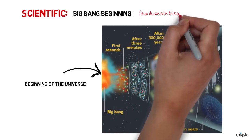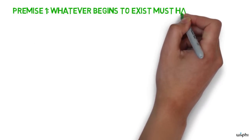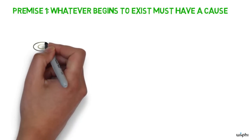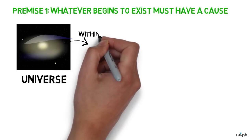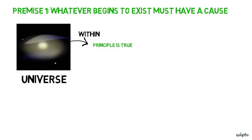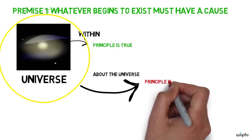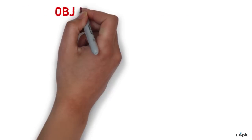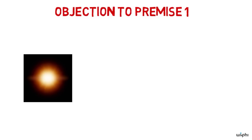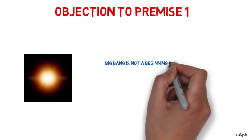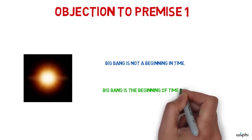We have considered objections to the second premise. What about objections to the first premise? An important objection to the first premise is that the principle is a good one, but it's a good principle within the universe. It's not a principle that can be applied to the universe as a whole. This objection could be stated in various ways. A specific version of this response is that the Big Bang is not a beginning as we usually think of beginnings. It is not a beginning of something in time, but the beginning of time itself. So the usual rules do not apply.